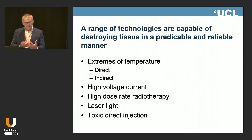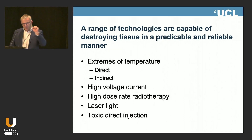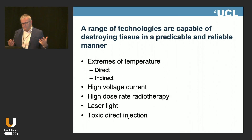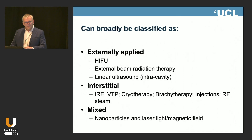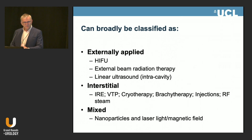Historically we've used extremes of temperature to coagulate proteins irreversibly and kill cells, high voltage current to blow holes in the cell membrane, high-dose radiotherapy to ablate the prostate, light in various forms, and direct toxic injection — which we had to abandon at end of phase one because we couldn't control where the toxin went.